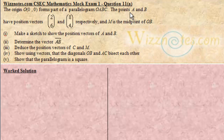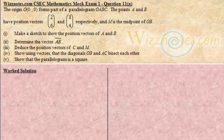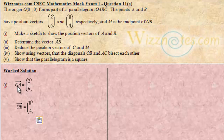The information given is that the position vector of A is (2,6), meaning vector OA is (2,6). The position vector of B is (8,4), meaning vector OB is (8,4). The coordinates of A are (2,6) and the coordinates of B are (8,4). So vector OA is (2,6) and vector OB is (8,4).